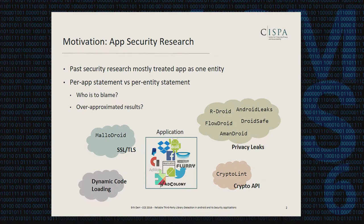Treating an application as a single entity could also lead to over-approximated results. For instance, when 20% of all applications you are testing leak private data, but all those privacy leaks just come from a single source. So we need to be able to detect libraries from application binaries to give a more accurate per-entity statement for such approaches.